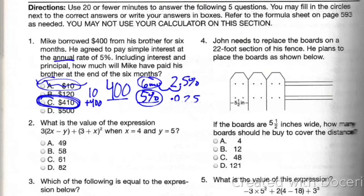What's the value of the expression 3 times (2x - y) plus (3 + x) squared when x equals 4 and y equals 5? Pause right now to try for yourself.